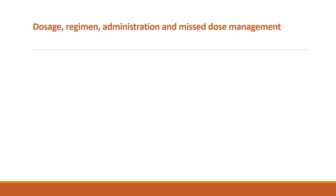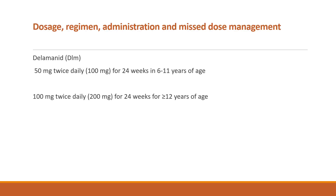Regarding dosage and regimen: Delamanid is used at 50 mg for 24 weeks in patients aged 6 to 11 years. For those 12 years of age and above, the dose is 100 mg twice daily, also for 24 weeks.